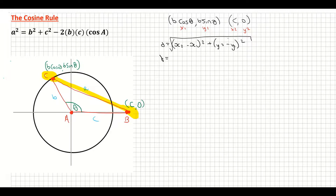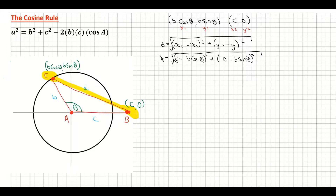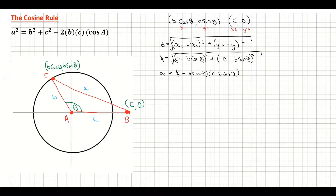Be very careful filling in the distance formula — this is where mistakes can be made. x2 is c, minus x1 which is B cos theta, all squared; plus y2 which is 0, minus y1 which is B sine theta, all squared — and make sure it goes back into the square root. I can change D to A because the distance from C to B is a length of A units.